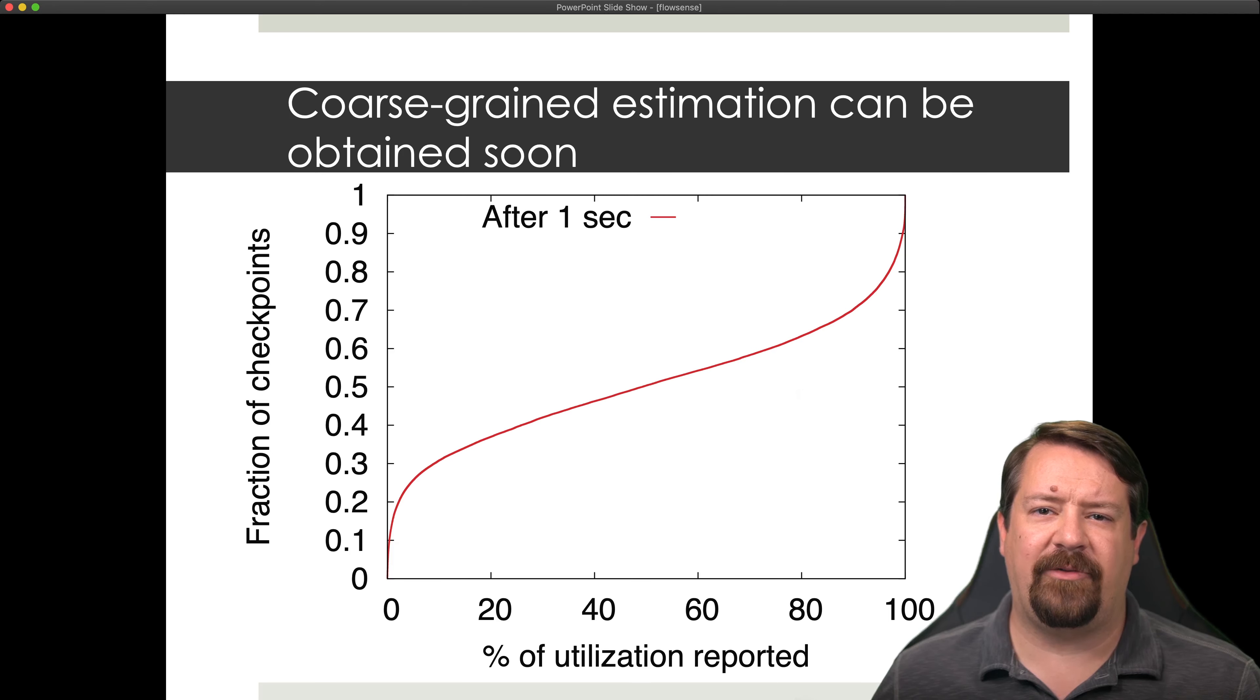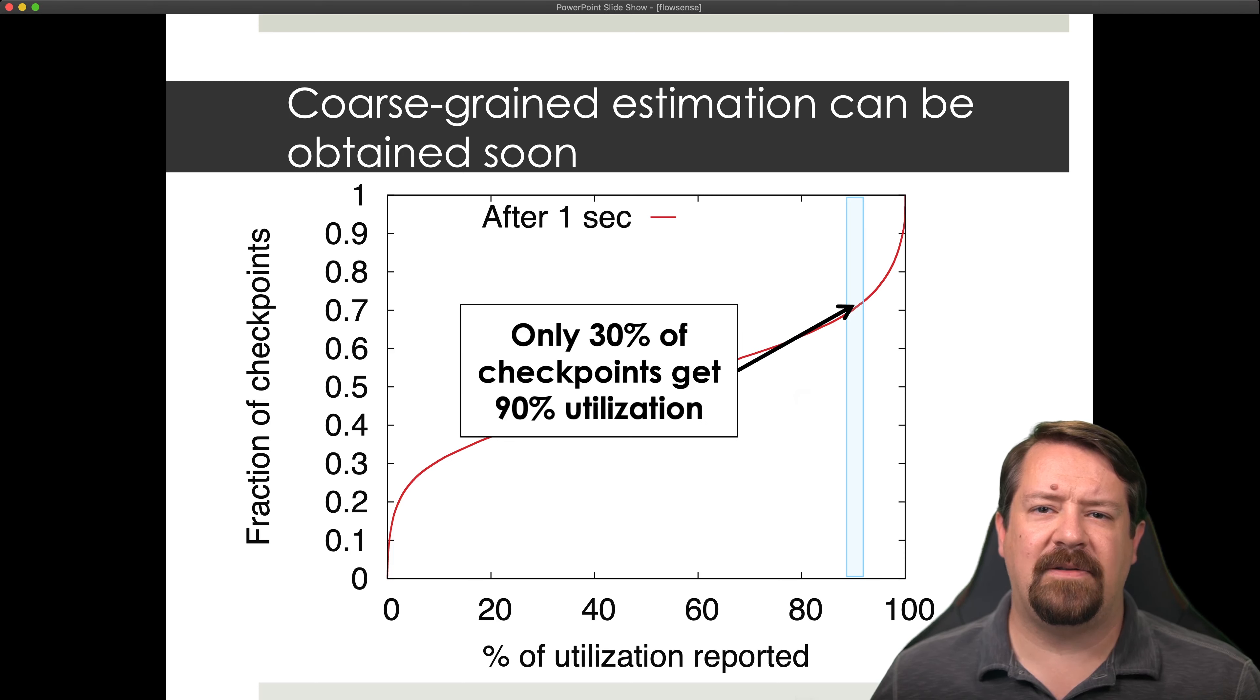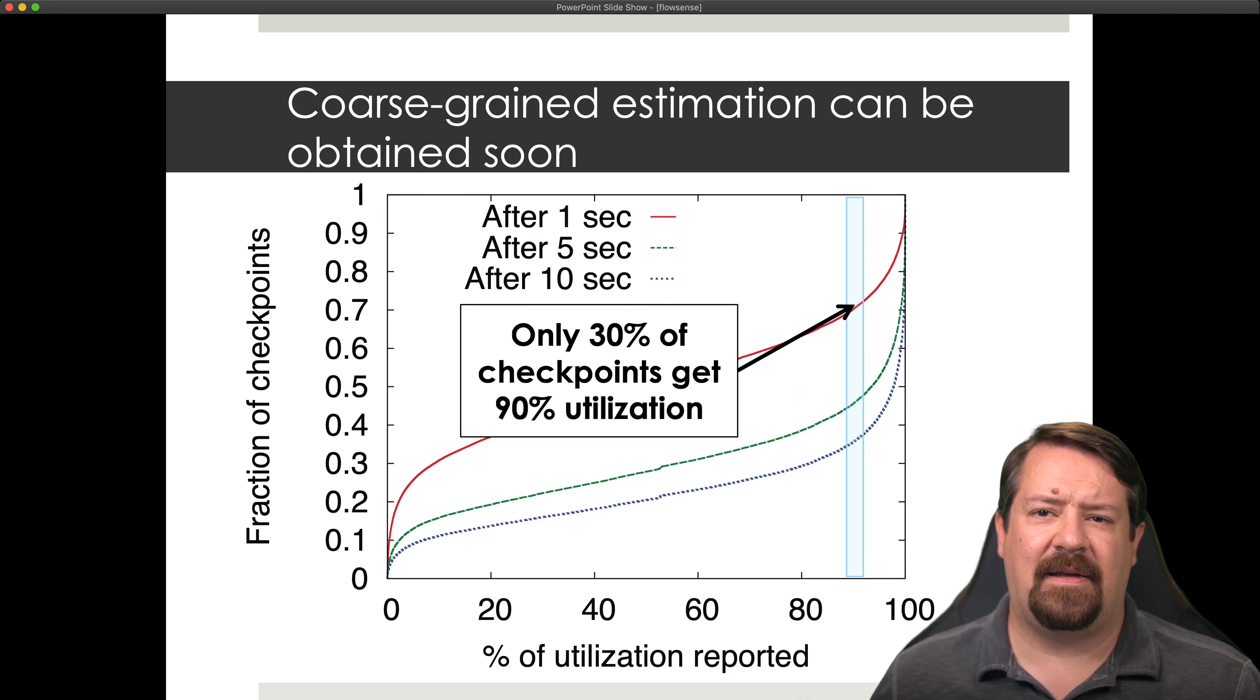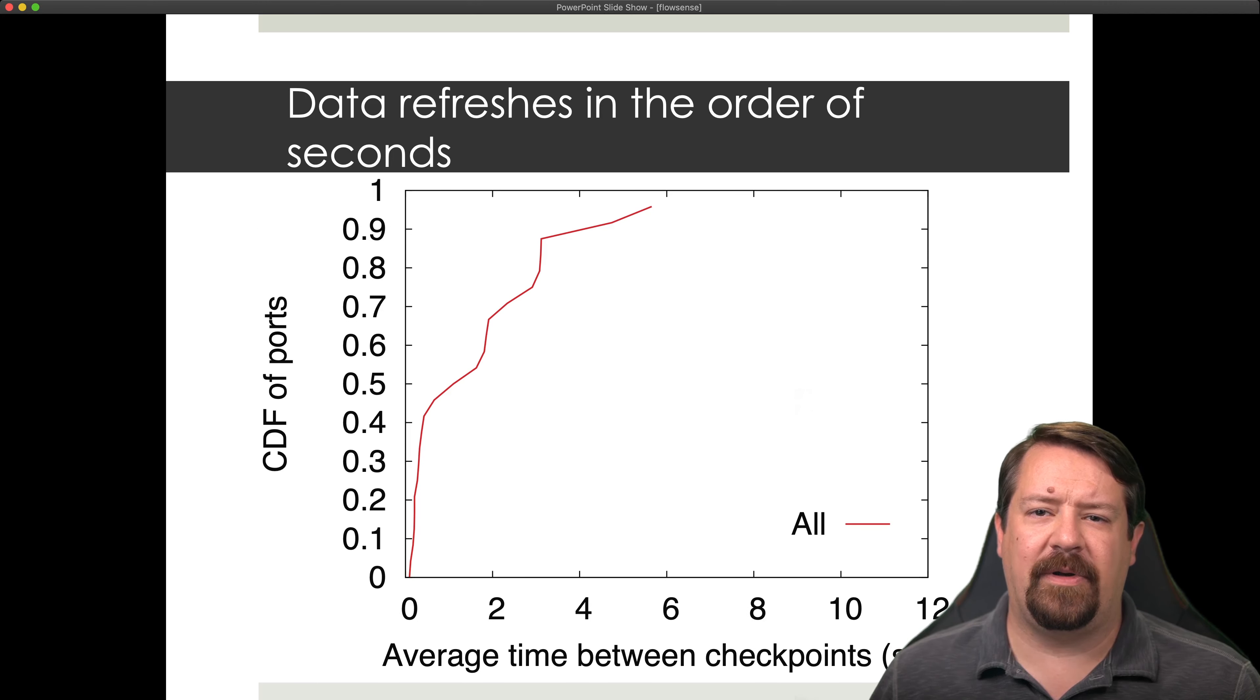So looking at how many checkpoints are completed after just one second, and the corresponding percentage of utilization that's reported, we can see that it follows a normal-shaped curve. And so we see that after just one second, about 30% of the checkpoints are able to report 90% of their utilization. If we increase that time to 5 seconds or 10 seconds, then more and more of the checkpoints are achieving greater than 90% utilization. Looking at the average time between the checkpoints, we're seeing that this is typically on the order of seconds. We're not going to get millisecond level accuracy out of this, just second level precision.